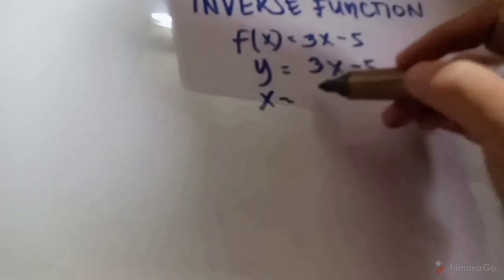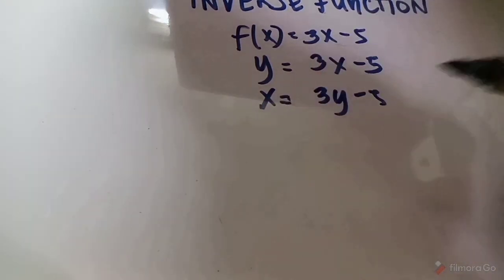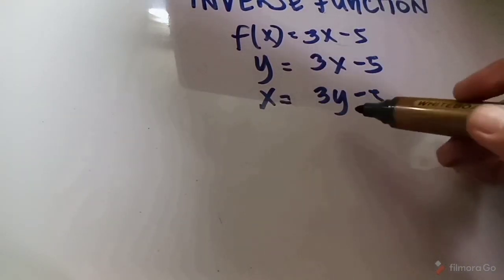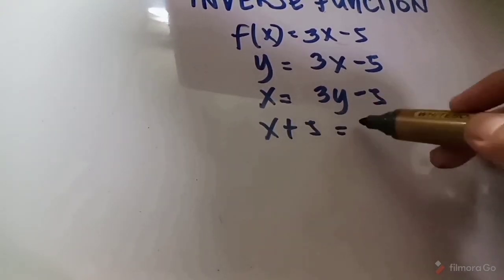Next example: f(x) = 3x − 5. Step 1: Replace f(x) with y: y = 3x − 5. Step 2: Switch x and y: x = 3y − 5. Step 3: Transpose — x + 5 = 3y.